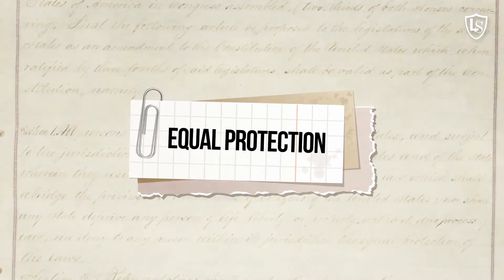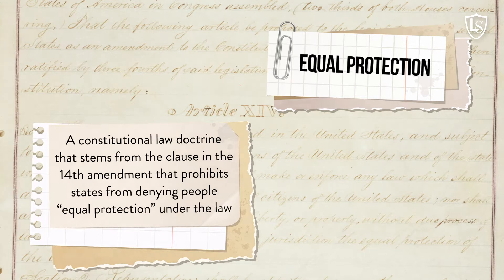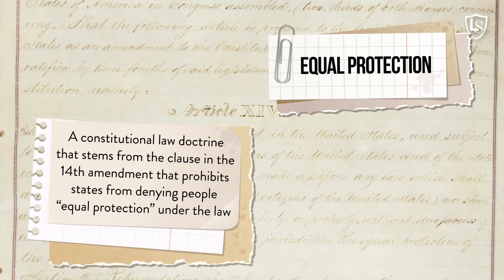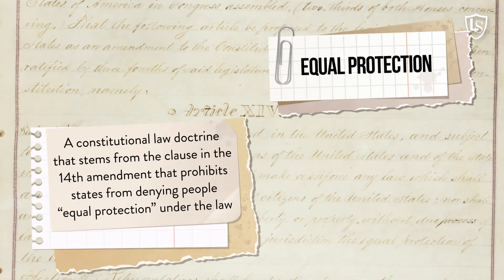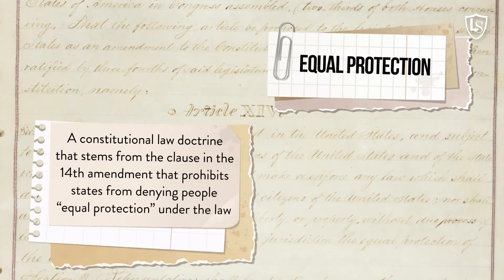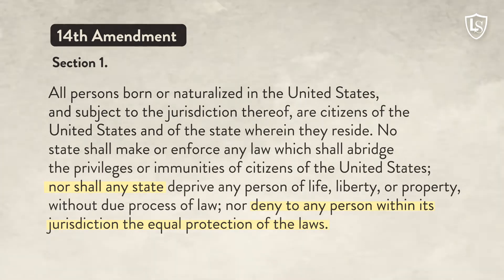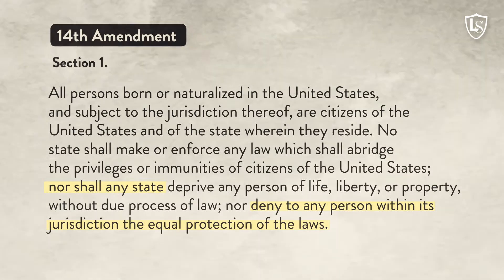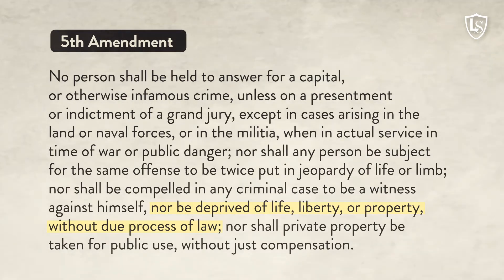Equal protection is a constitutional law doctrine that stems from the clause in the 14th Amendment that prohibits states from denying people equal protection under the law. Though the 14th Amendment, by its terms, applies only to the states, the Equal Protection Clause has been applied to the federal government as well through the Due Process Clause of the Fifth Amendment.